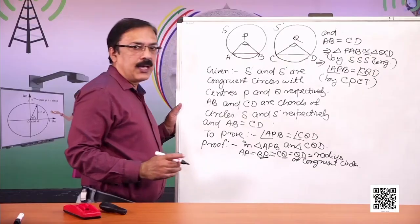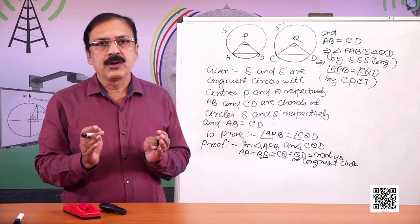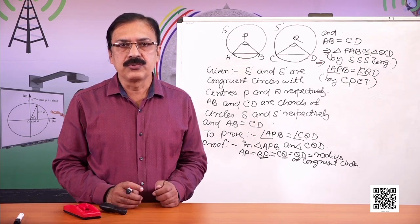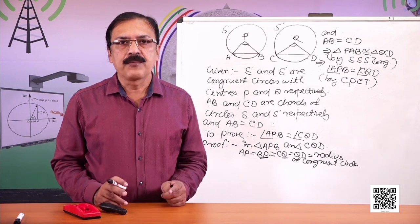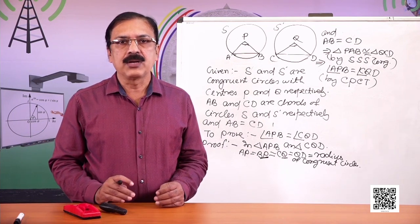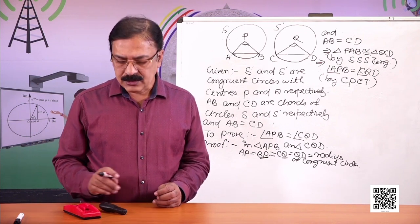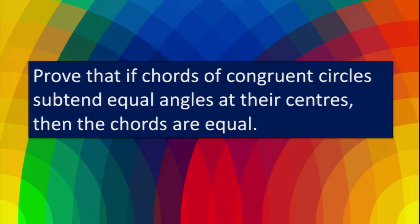So here again we proved the same thing. But if the circles are congruent, the theorem also holds that if two chords of congruent circles are equal, then they subtend equal angles at their respective centers. Now let's have another question: prove that if chords of congruent circles subtend equal angles at their centers, then the chords are equal.